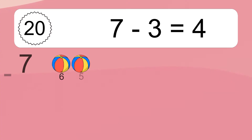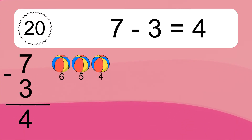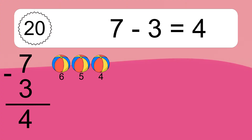7 minus 3 equals what? 7 minus 3 equals 4. Let's count it: 6, 5, 4.